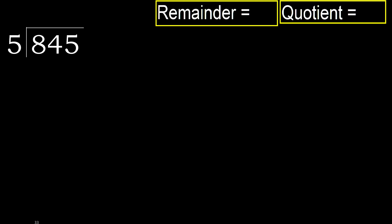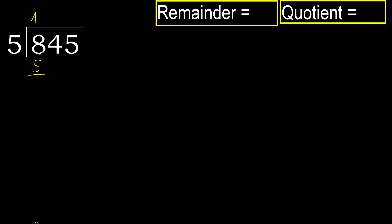845 divided by 5. Starting with 8: 5 multiplied by which number is nearest to 8 but not greater? 5 multiplied by 2 is 10, which is greater. 5 multiplied by 1 is 5, which is not greater. Subtract: 8 minus 5 is 3. Next.